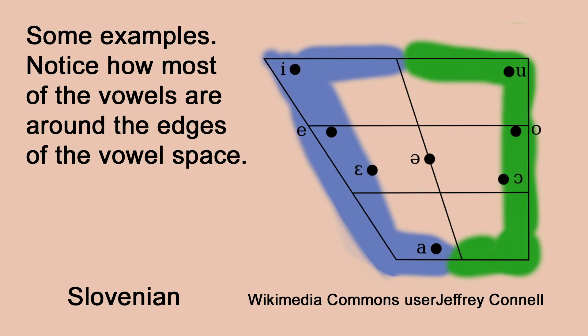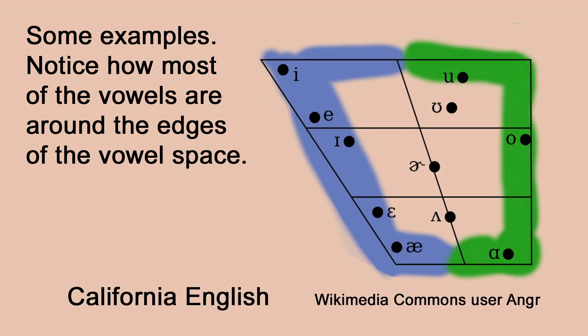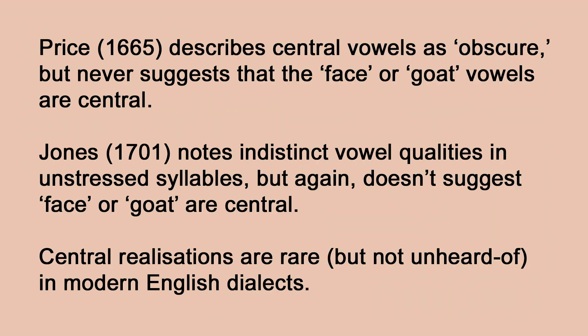You might have noticed I've been assuming the vowel qualities were around the edges of the vowel space. Is it not possible they were more central? Well, there's a really strong cross-linguistic pattern whereby vowel qualities tend to be spaced out around the vowel space — you never see a vowel inventory clustered centrally. Some languages do have central vowels, and English is one of them, but peripheral vowels are overwhelmingly more common. The face and goat vowels are peripheral in all the later dialect recordings, and older grammarians sometimes describe known central vowels as 'indistinct' but never make that comment about face or goat.